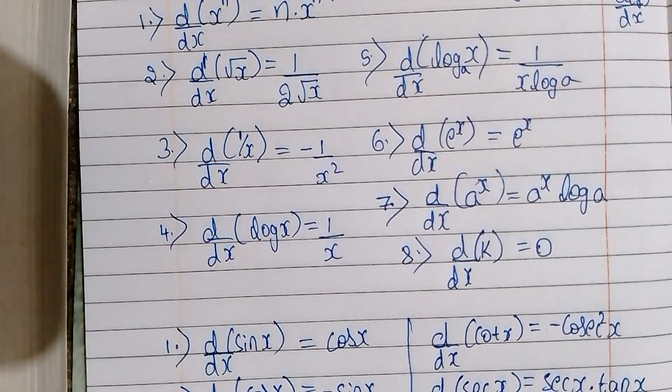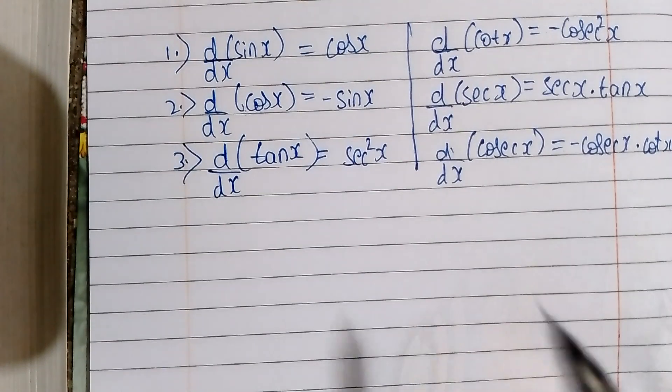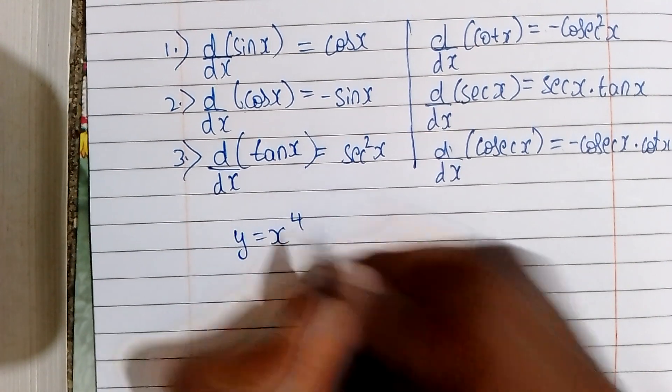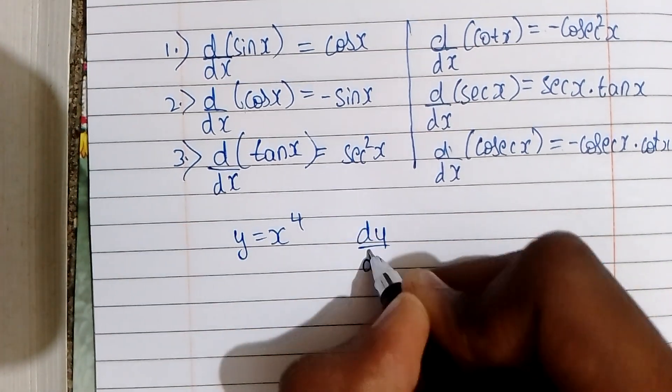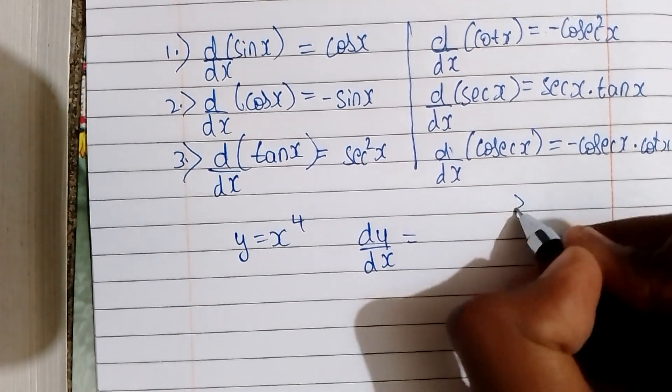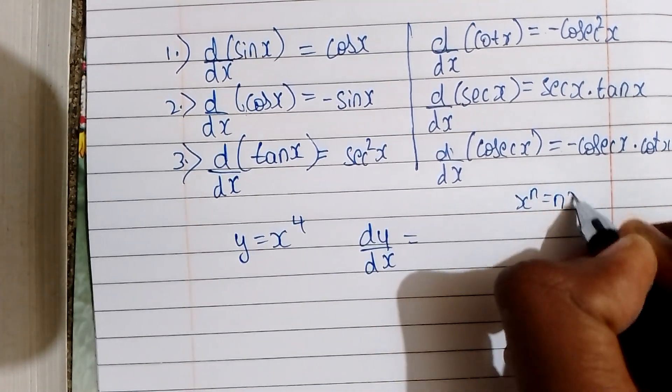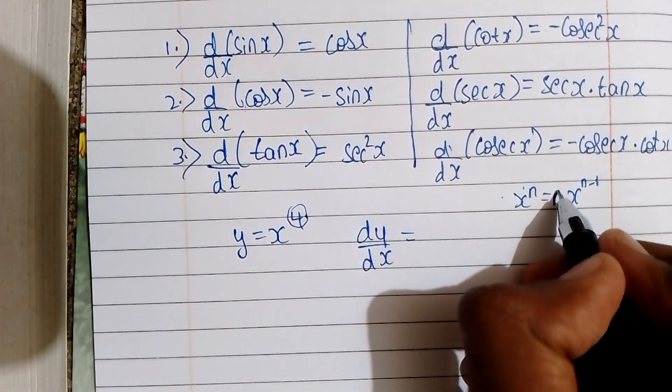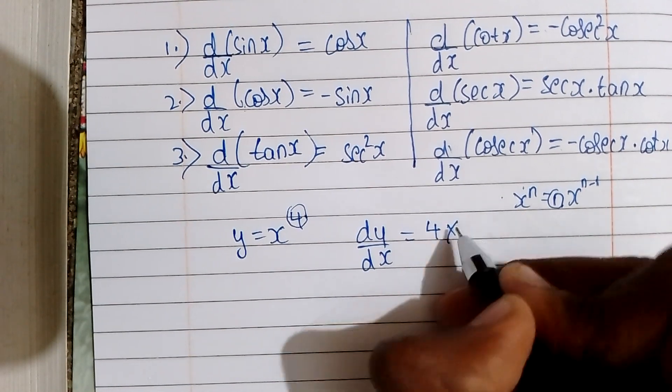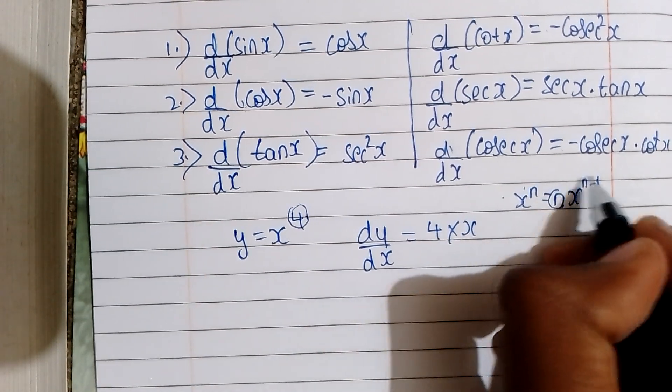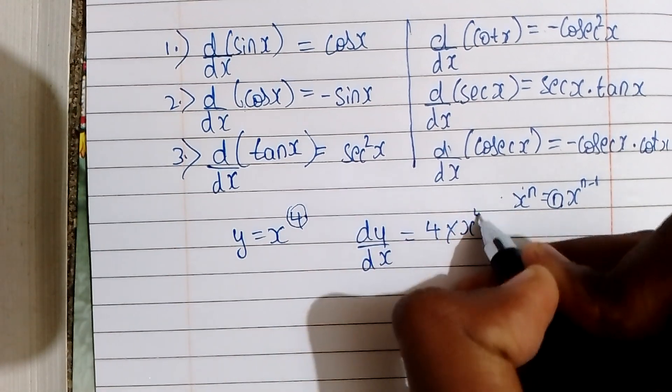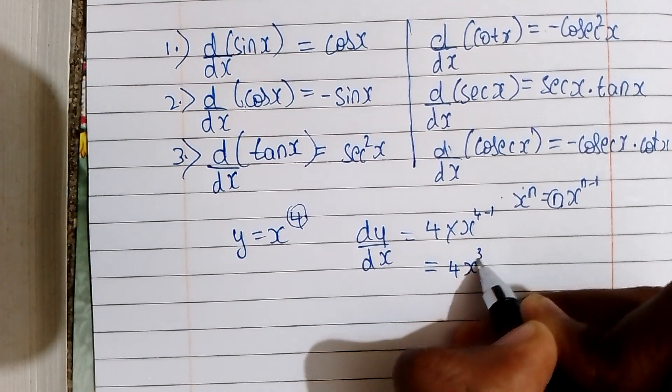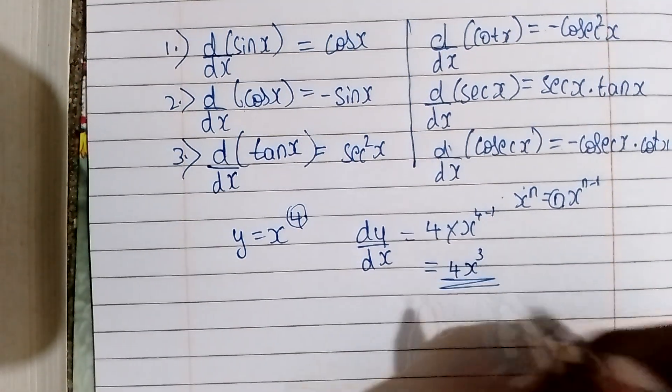For example, if y = x^4, what is dy/dx? We have the formula x^n means n times x^(n-1). This x^n means x^4, so the answer is n=4, so 4 times x^(4-1), 4 minus 1 is 3. The answer is 4x³, 4x cube.